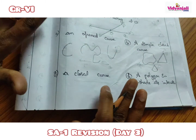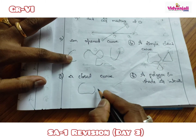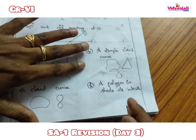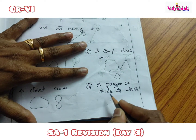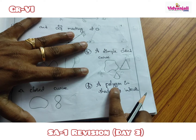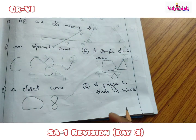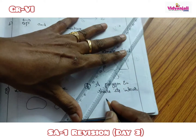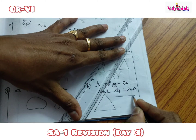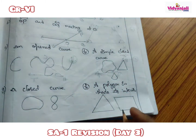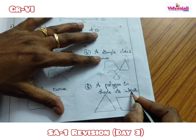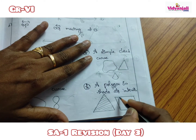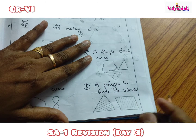A closed curve just needs to be closed — it may or may not intersect itself. A polygon is a simple closed curve made up of only line segments — it must be closed, not self-intersecting, and drawn with straight line segments only. You can draw a triangle, parallelogram, or square. Shade its interior — inside the figure — while the outside is called the exterior.